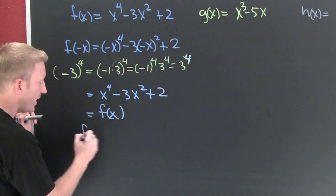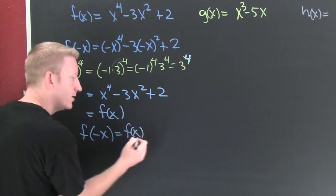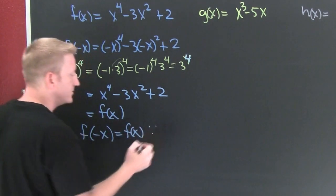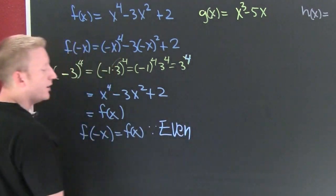So what do we have here? We have f of minus x is equal to f of x. So what do you say? Dot, dot, dot. Even.